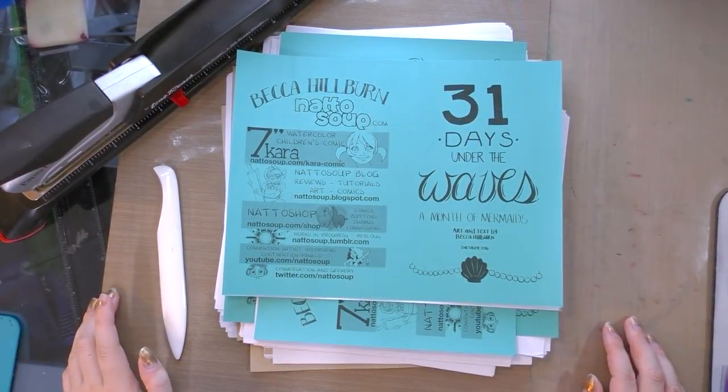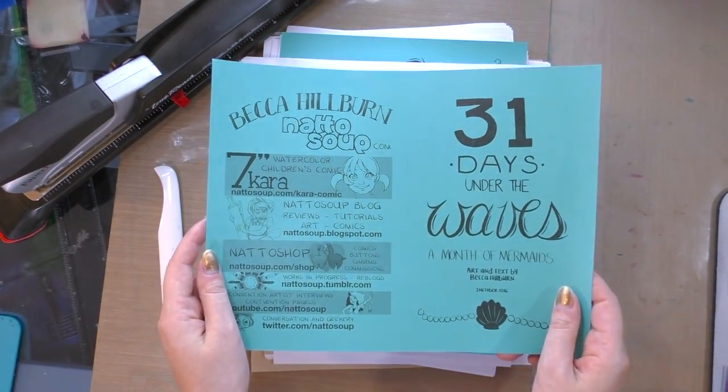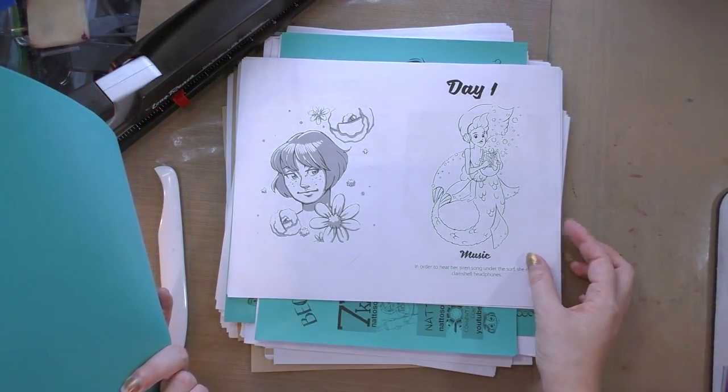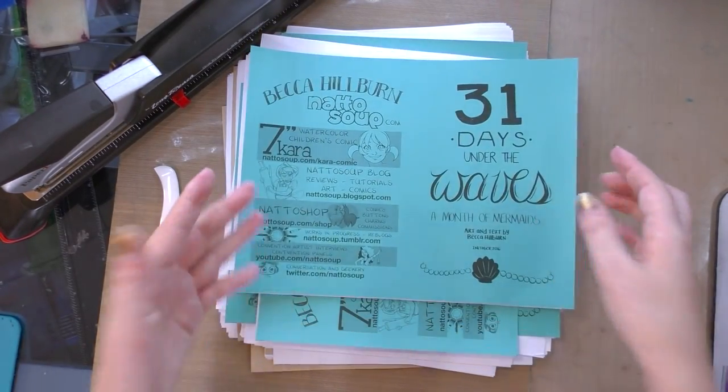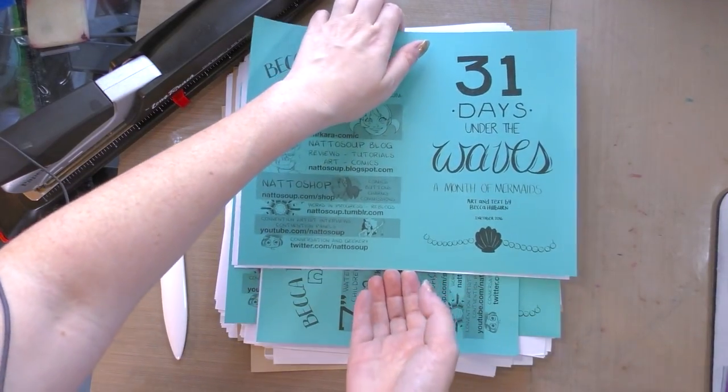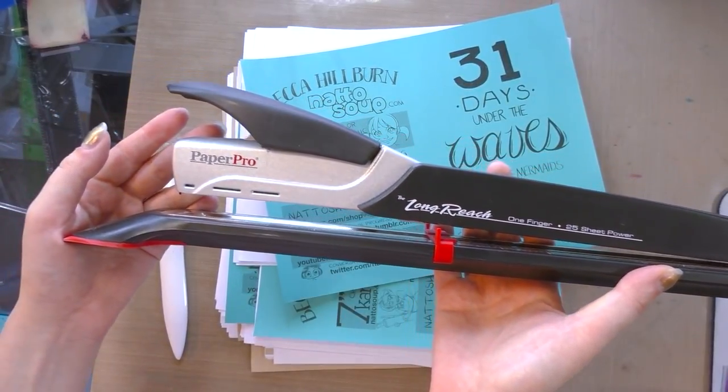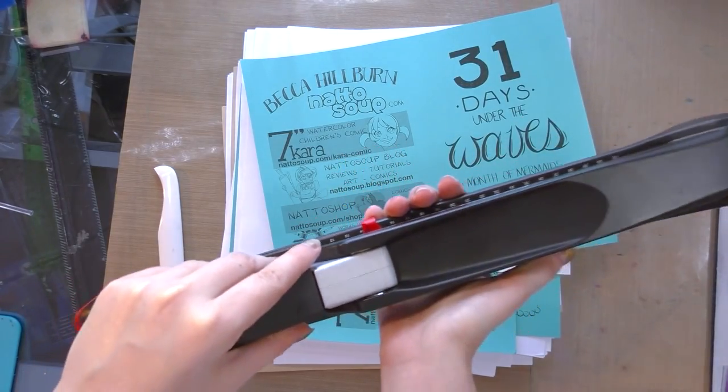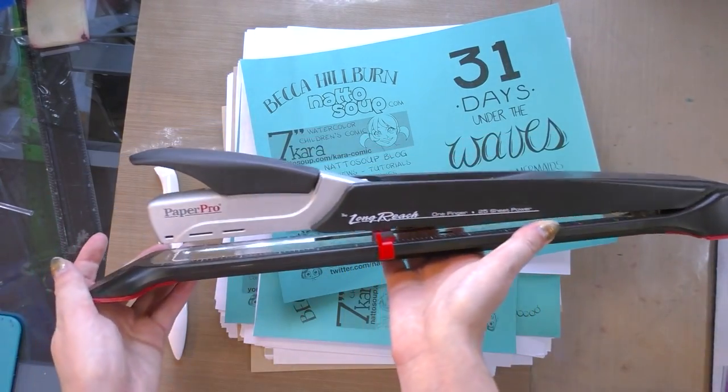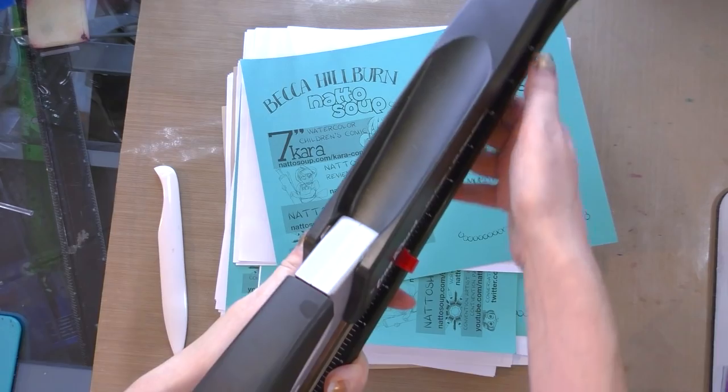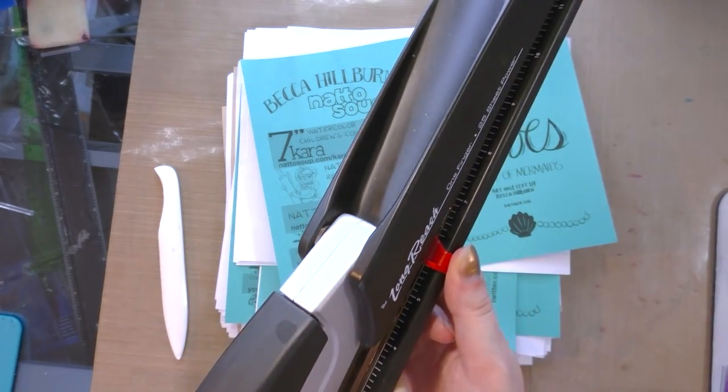The materials you're going to need are your cover stock, and it can be colored paper or a color printed cover. Your inner stock, and I generally use cheap printer paper, just something thick enough that when I print black and white it won't show all the way through. A long arm stapler. I have here a long reach one finger 25 sheet paper pro stapler. You don't have to get this one, but I've had this one for 10 years and it's still holding up strong. You ideally want a long reach stapler that has a ruler on both sides as well as a lineup guide.